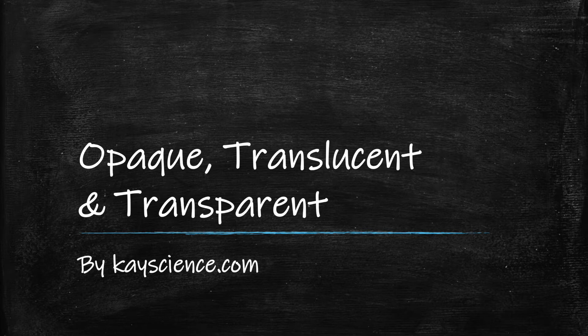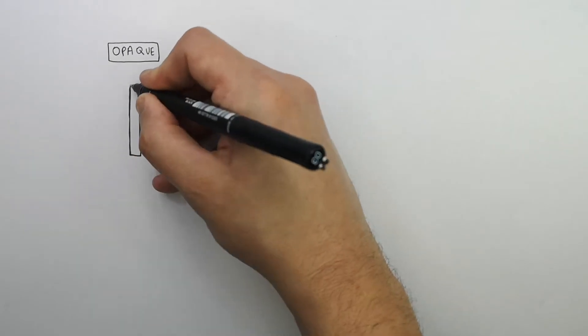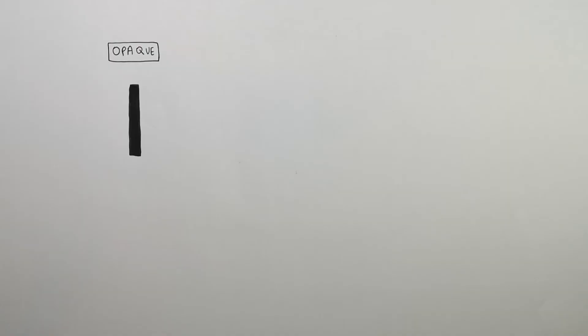Opaque, translucent, and transparent materials by kscience.com. This here is an opaque object.